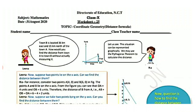We have two candidates — first one is Lina and second one is Ria. Lina is saying: town B is located 36 km east and 15 km north of town A. How do you find the distance from town A to town B without actually measuring it? With the help of coordinate geometry, we have to find the distance between town A and town B.